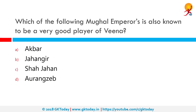Which of the following Mughal emperors is known to be a very good player of Veena? Aurangzeb was an accomplished Veena player. However, he had banished singing from his courts but had not banished playing musical instruments. Music in all forms continued to be patronized by his queens, and the largest number of books on classical music were translated into Persian during his reign.